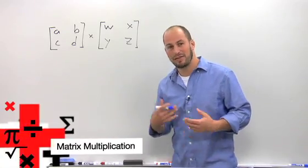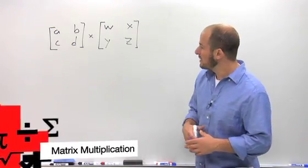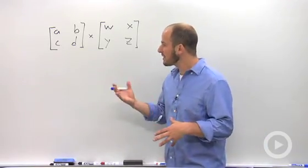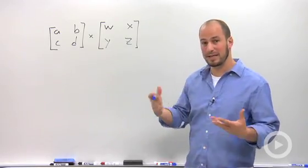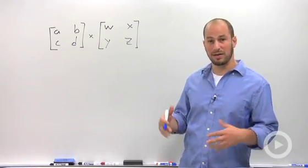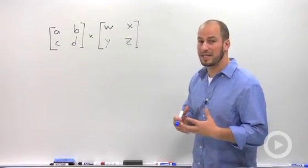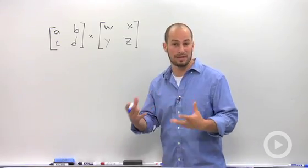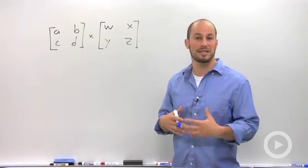Matrix multiplication is one of the trickier things that we do with matrices, and so we're going to take a look at sort of an abstract idea and figure out how it all works together. When multiplying matrices, the first thing we need to do is make sure we actually can multiply matrices together, and not all matrices can always be multiplied.